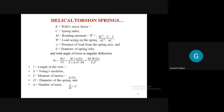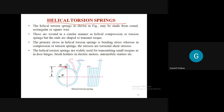So in a helical torsion spring, bending stress is produced, while in helical compression springs, torsional shear stress is produced. The names and stresses are different. Applications of helical torsion springs include door hinges, brush holders of electric motors, and automotive starters. Even though it is not in the syllabus, remember: helical torsion spring - torque is applied at the ends, but the stress induced is bending stress.